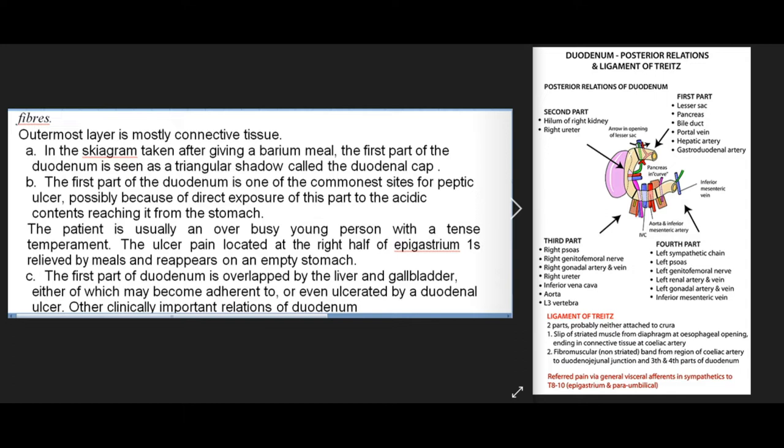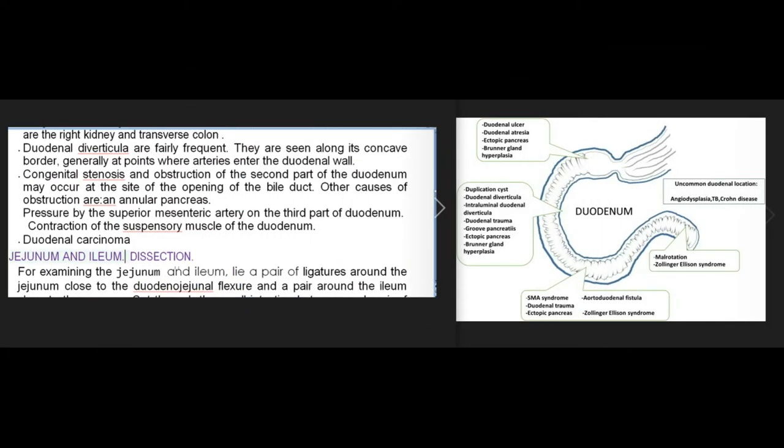The patient with a duodenal ulcer is usually an overbusy young person with a tense temperament. The ulcer pain is located at the right half of the epigastrium, relieved by meals and reappearing on an empty stomach. The first part of the duodenum is overlapped by the liver and gallbladder, either of which may become adherent to or ulcerated by a duodenal ulcer. Other clinically important relations include the right kidney and transverse colon.